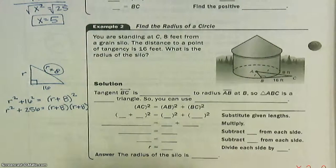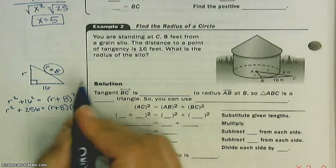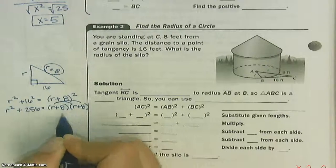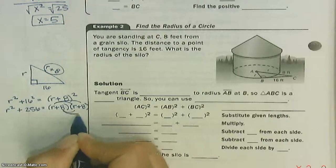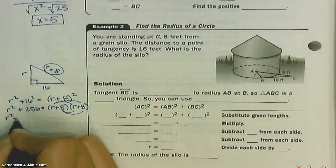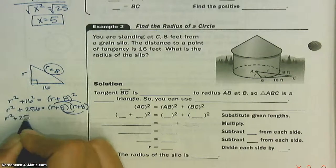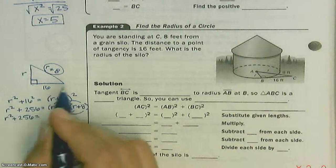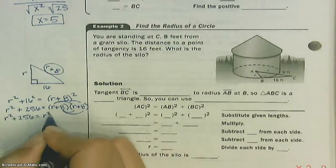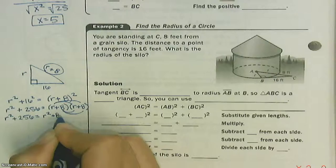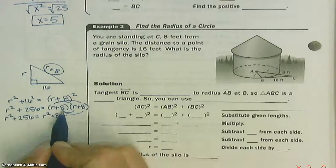If you remember, your algebra teachers may have used the word FOIL or it's just distribution. We have to distribute this R and distribute this 8. All right, so here we go. Let's do this. R times R is R squared. R times 8 is 8R. Now, down here.